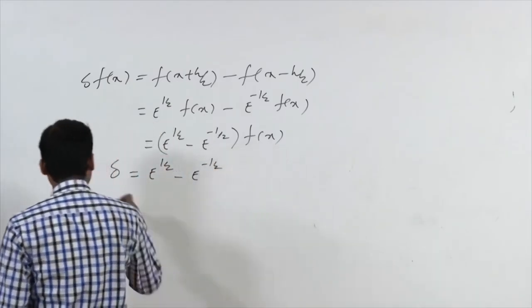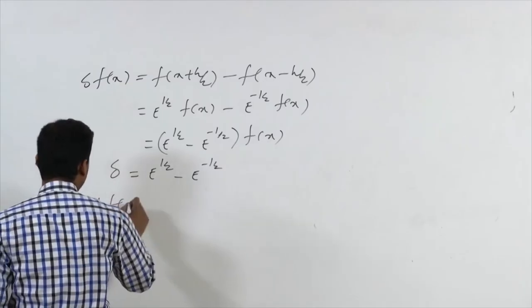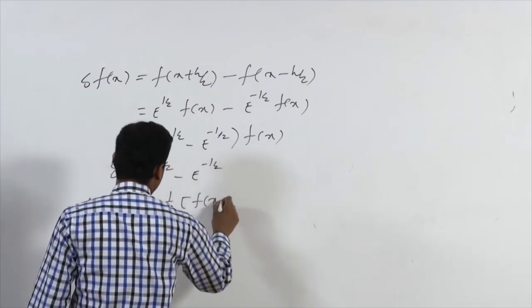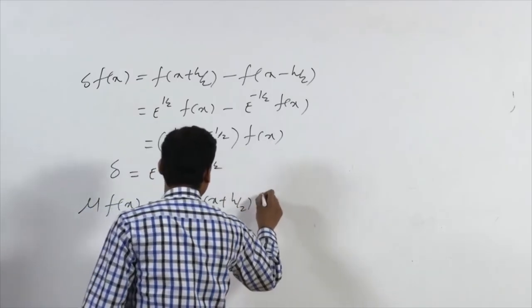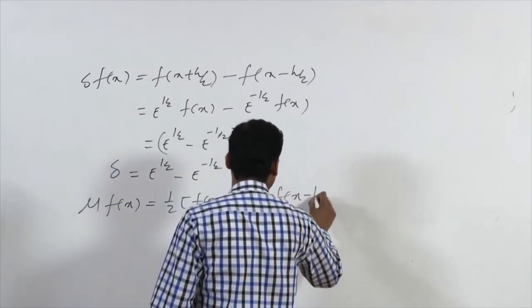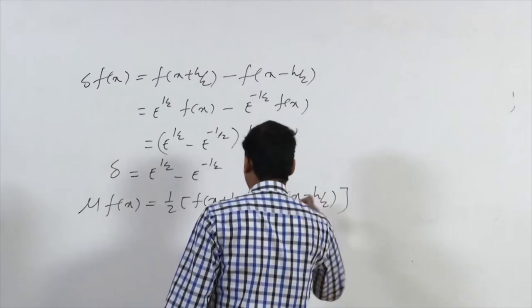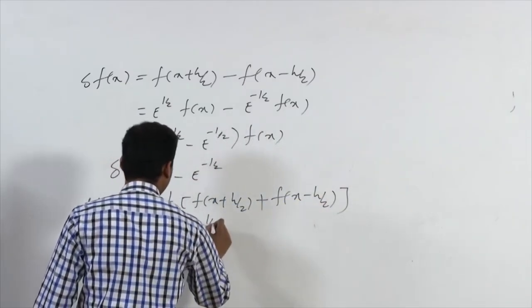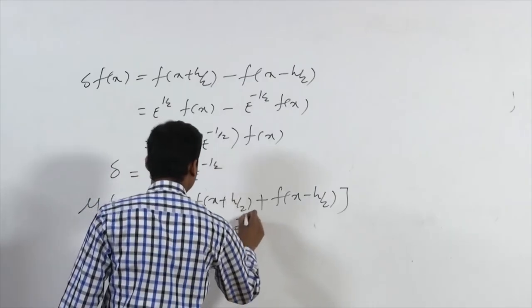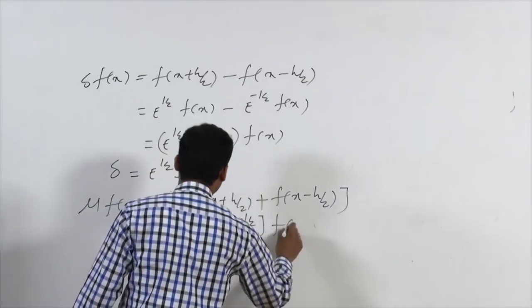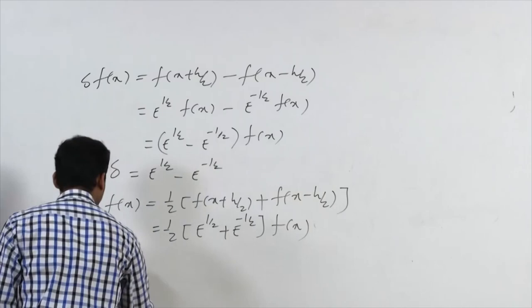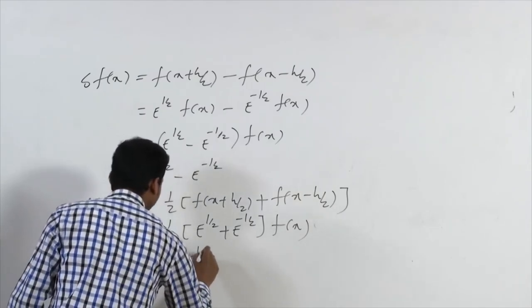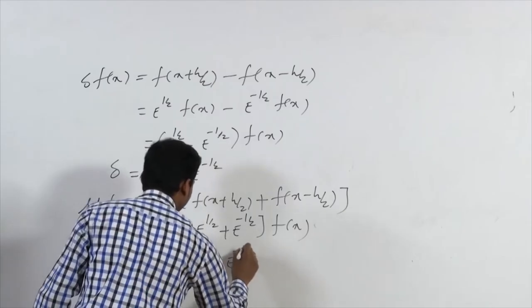Similarly, the average operator μ[f(x)] = (1/2)[f(x+h/2) + f(x−h/2)] = (1/2)[E^(1/2) + E^(−1/2)]f(x), so μ = (1/2)(E^(1/2) + E^(−1/2)).